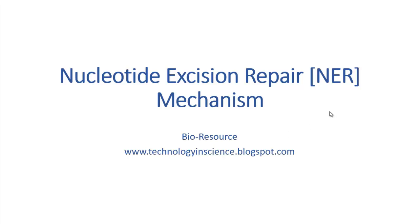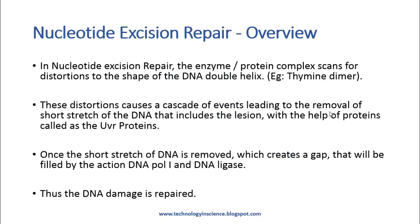Welcome to the presentation on nucleotide excision repair. In nucleotide excision repair, a protein complex scans for distortions to the shape of the DNA double helix — examples include thymine dimers. These distortions are caused by either chemical mutagens or UV light.